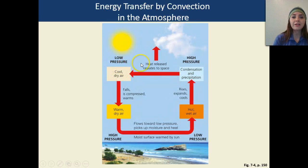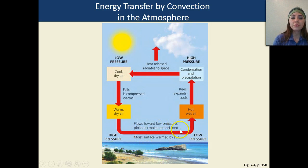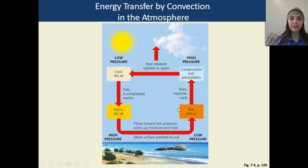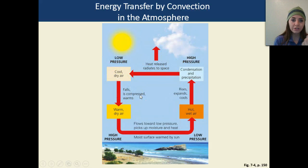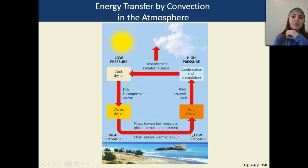We also have energy transfer by convection in the atmosphere. Starting with high pressure, moist surface air is warmed by the sun over oceans. That air flows toward a low-pressure system, picks up moisture and heat, and gets carried upward. The hot, wet air rises and expands. Eventually it condenses, cools, and we get precipitation — rain, snow, sleet, or hail. Some heat is released into space. The now-dry, cool air sinks, compresses, and warms. The warm, dry air then picks up moisture again as it passes over a body of water, and the cycle continues.